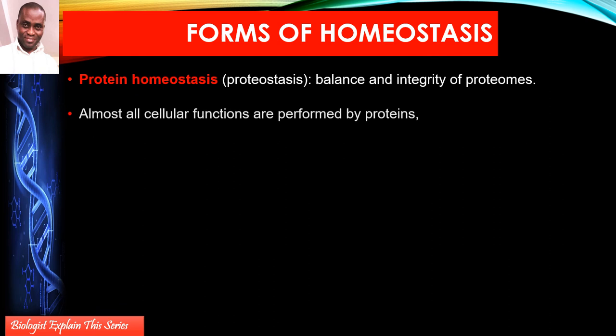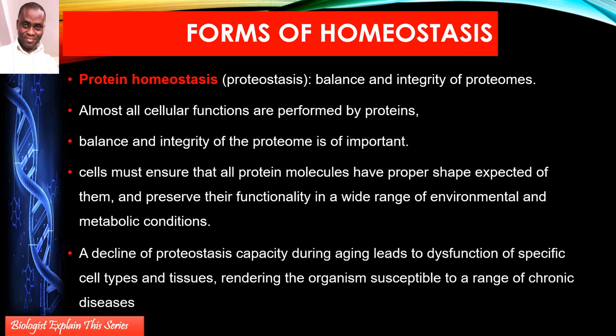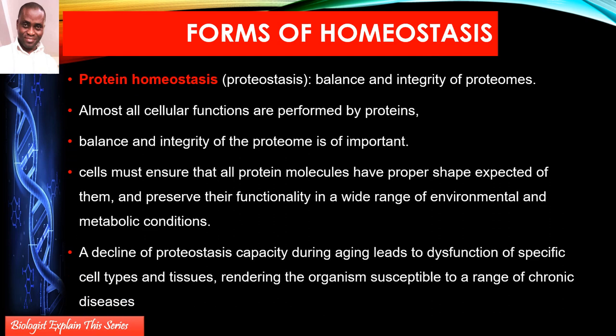We've got protein homeostasis. There are a lot of proteins in the body that we have to maintain. Too much protein in the blood can attract water — because proteins make the blood have a more negative solute potential, meaning the blood becomes concentrated — and water then enters from surrounding cells, which can lead to oedema, a swelling of the tissue. So proteins have to be managed: not too much, not too little, so that fluids will not have too negative or too positive a water potential.